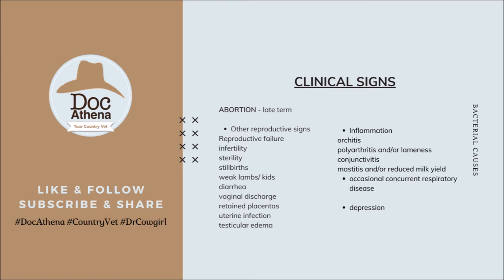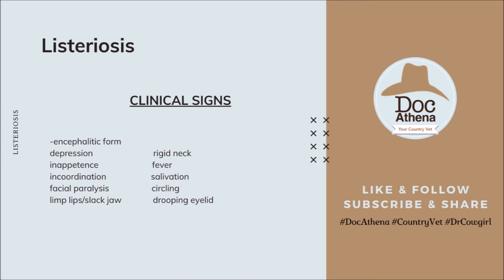When there is excessive or abnormal salivation in your animal, please consider listeriosis. Use gloves when inspecting the oral cavity because listeriosis is zoonotic, especially in immunocompromised patients. Leptospirosis can also cause abortion during leptospiremia — when Leptospira bacteria are already in the blood. There will also be anemia, icterus, and hemoglobinuria. You can check the eyelid and gums of the animal for icterus or jaundice. With leptospirosis, there may be fever or a normal temperature.